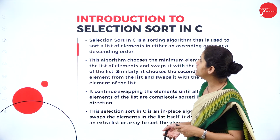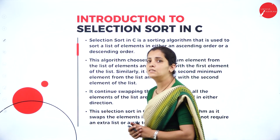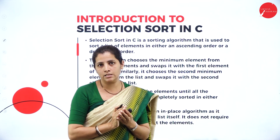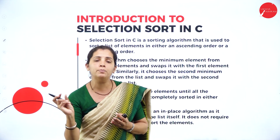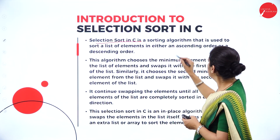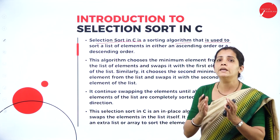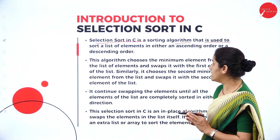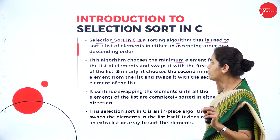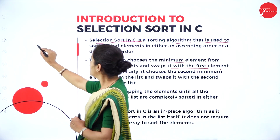Under brute force technique, today I'm going to deal with selection sort and linear search. As the name indicates, selection sort involves selecting a particular item and placing it in its actual position — selecting the smallest element and placing it in the correct place. Selection sort is a sorting algorithm used to sort a list of elements either in ascending or descending order. This algorithm chooses the minimum element from the given list and swaps it with the first element.